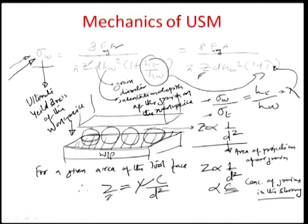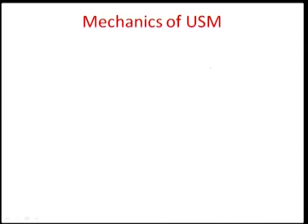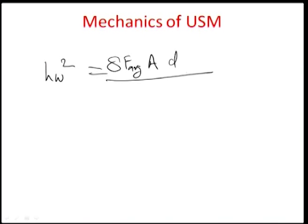The final form of the equation gives us h_w squared equals 8 times the average force times amplitude A times grain diameter, divided by pi times psi, and the flow stress of the material is equivalent to the hardness of the material. So sigma_w and h_w are kind of interconvertible.